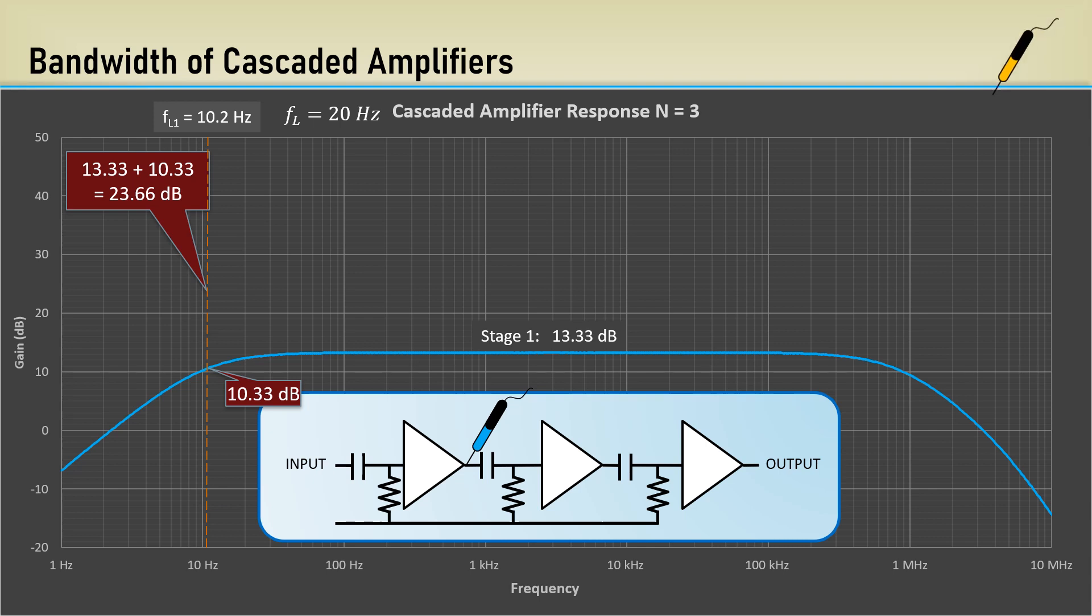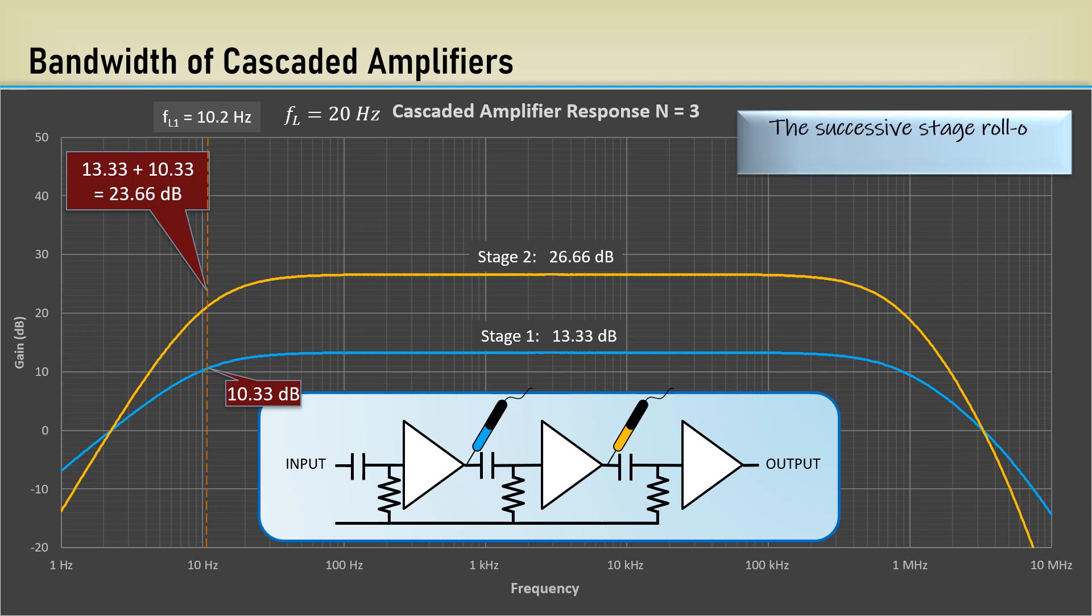Let's probe the output of stage 2. Notice we are falling short of that. The profound takeaway is the successive stage roll-off effects reduces the band edges. There's only 10.33 dB of gain added there. I'm pretty simple-minded, so the way I think of it is, you would need a flat input from stage 1 to attain the 23.66 dB corner at 10.2 Hz.